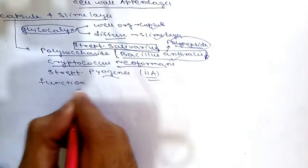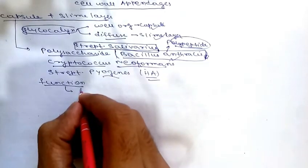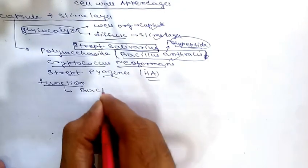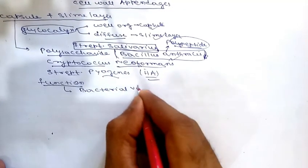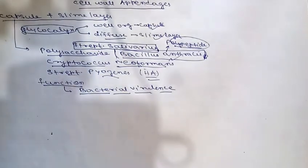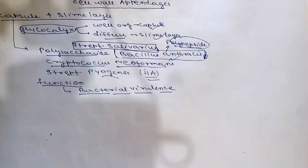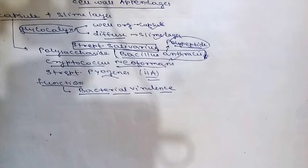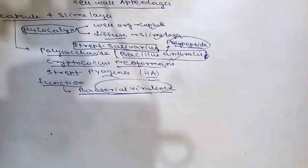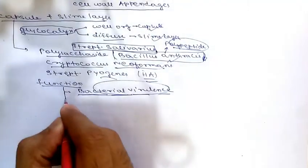The capsule has various functions. First, it contributes to bacterial virulence — it protects the bacteria from phagocytosis, prevents complement-mediated bacterial cell lysis, prevents the cell from drying out, and protects the bacterium from the action of lysozymes and bacteriophages.